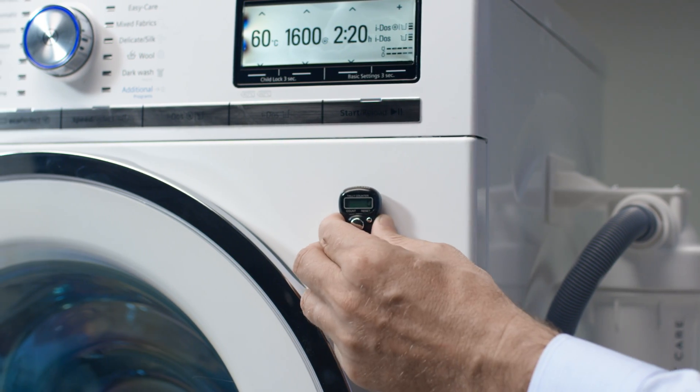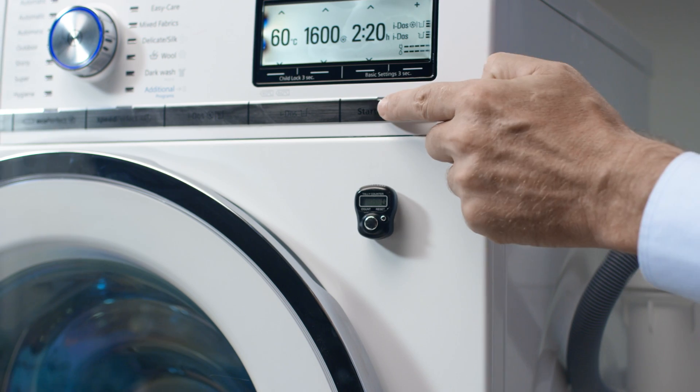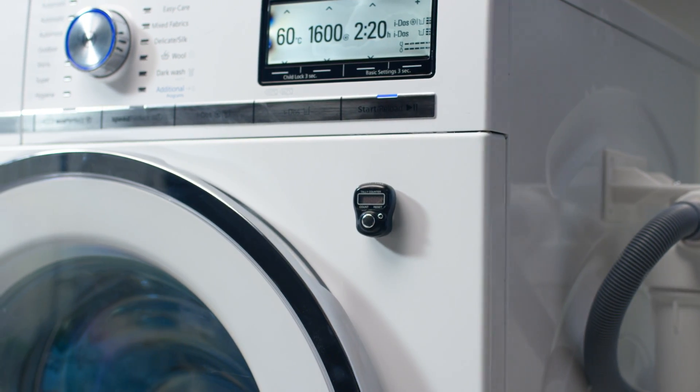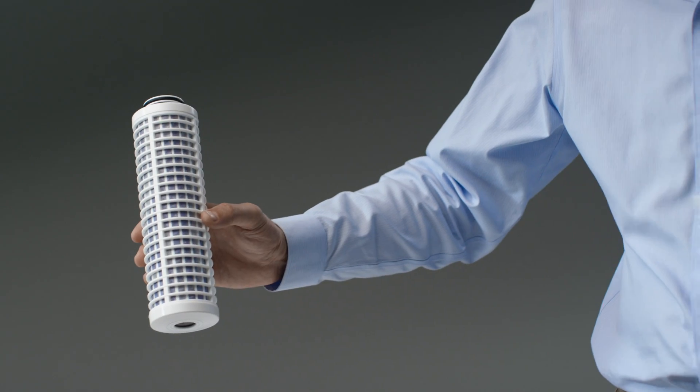Stick the counter under the ON button and press on the button on the counter every time you use your washing machine. After approximately 20 washes, the cartridge should be replaced.